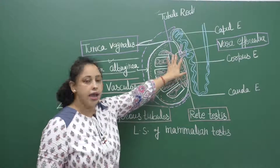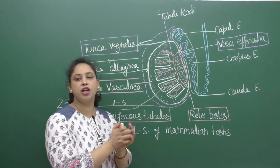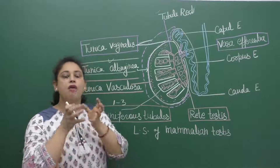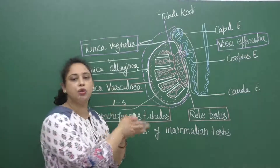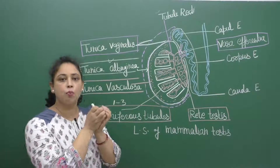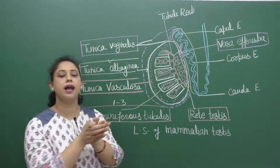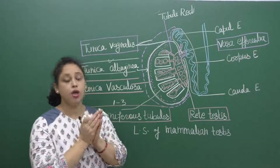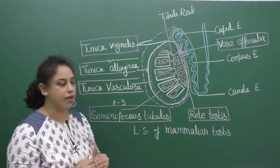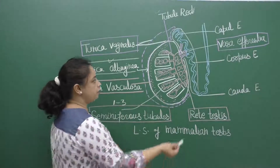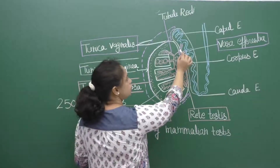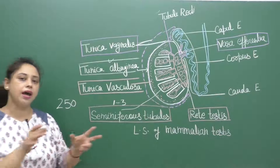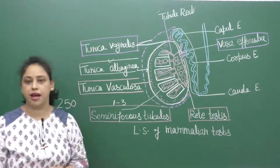From the end of the rete testis, small ductules emerge. These ductules pierce through the Tunica albuginea layer and enter into the epididymis. These small ductules are called vasa efferentia, and they enter into the epididymis.